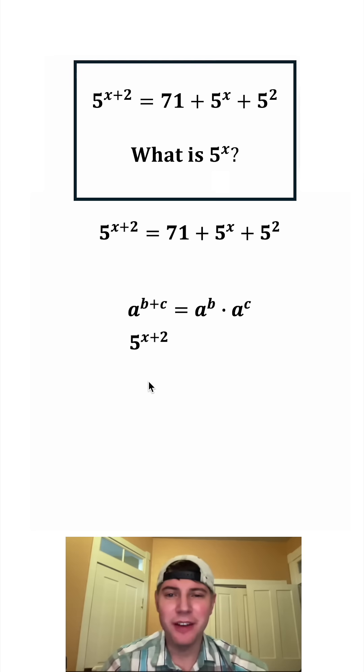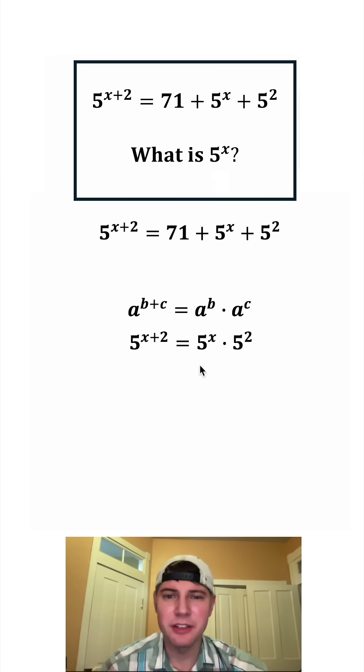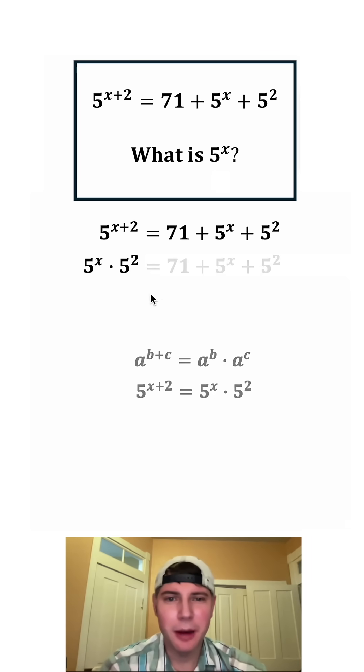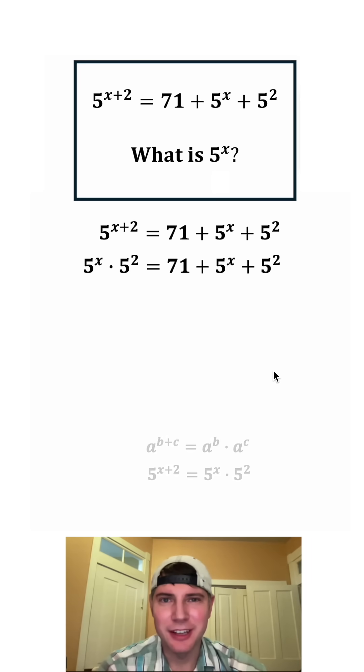Or in this case, 5 to the x plus 2 can be rewritten as 5 to the x times 5 to the 2. Let's change that up here, and then we can copy down everything else.